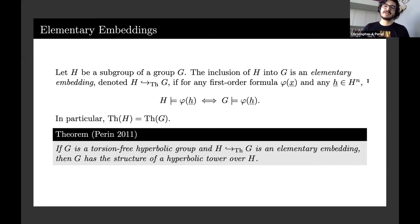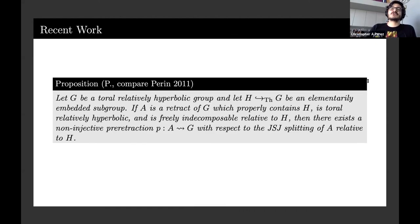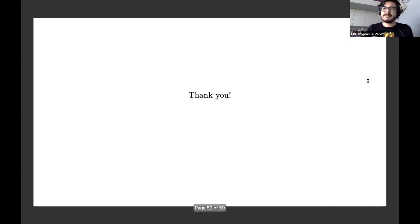What I worked on recently was generalizing Perin's result to toral relatively hyperbolic groups. Just briefly, I'm not going to go into any details of how the proof works, but the difficult part of it was showing that when you have an elementarily embedded subgroup, you can find pre-retractions. It's very hard to actually do, and I'd be happy to talk about the details later during the geometric group theory session, but that's it for now.